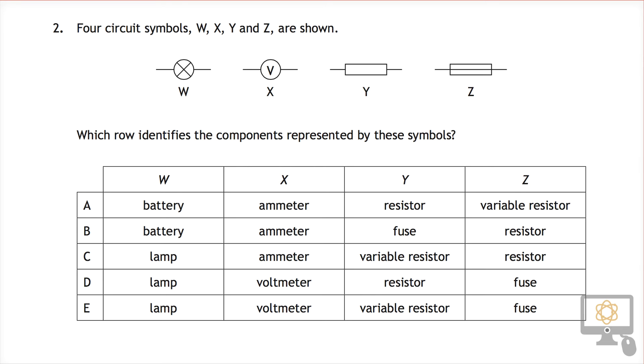Looking at question 2 from the National 5 2014 physics paper. It says four circuit symbols W, X, Y and Z are shown below. Which row identifies the components represented by these symbols?